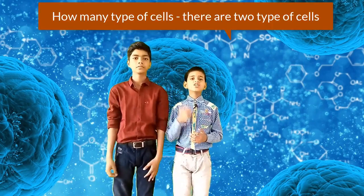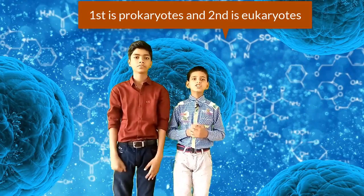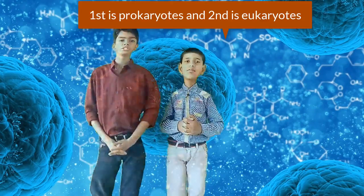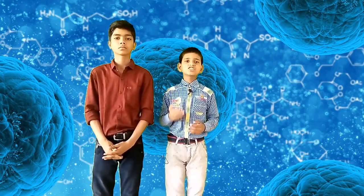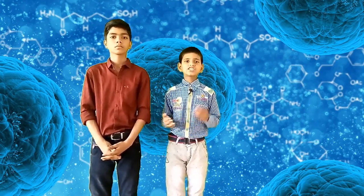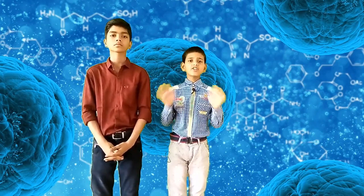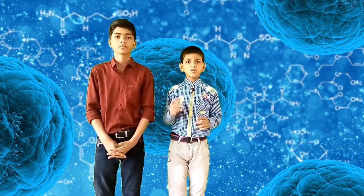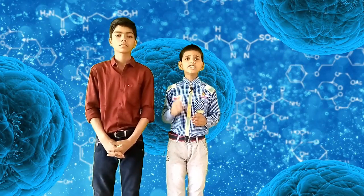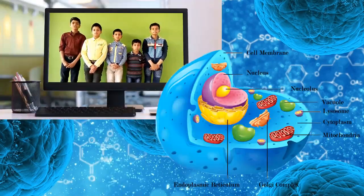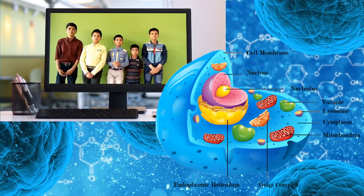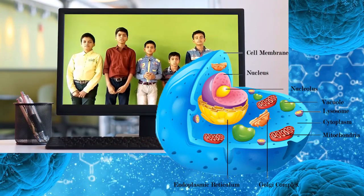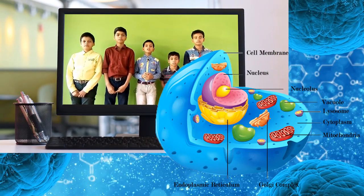There are two types of cells: prokaryotes and eukaryotes. Eukaryotes are complex cells found in plants, animals, and fungi. They are around 10 times larger than single-cell prokaryotes and contain small compartments called organelles. Inside the cell, there is the nucleus — the cell's control center. Inside the nucleus, there is a nucleolus. Outside the nucleus is the cytoplasm, a gel-like substance surrounding the nucleus.